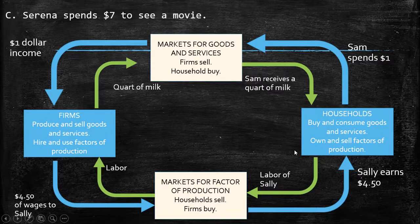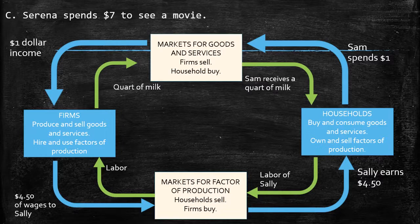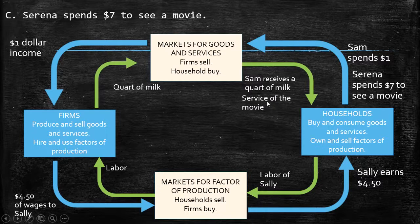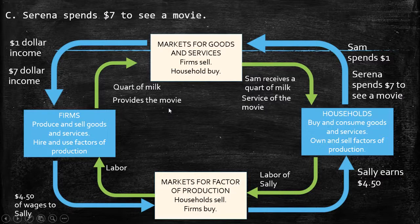The third activity: Serena spends $7 to see a movie. This is similar to the first, with the particular difference that we're not talking about a good but a service. In the outer loop, Serena spends $7, and in return she receives the service of the movie. The firm produces and sells the service — the cinema provides the movie — and in return receives $7 income.